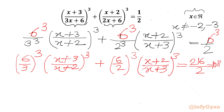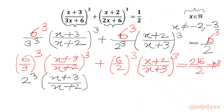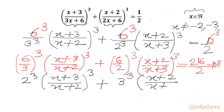Now 6 over 3 is 2 and 6 over 2 is 3. So I can write 2 cubed times x plus 3 over x plus 2 whole cube, plus 3 cubed times x plus 2 over x plus 3 whole cube equal to 108.